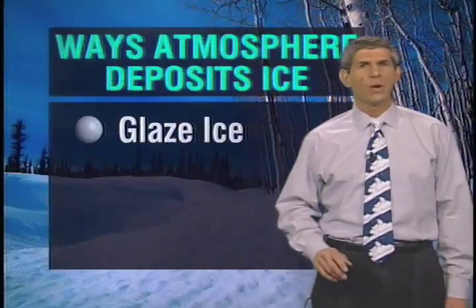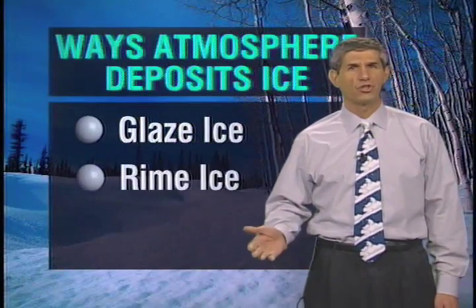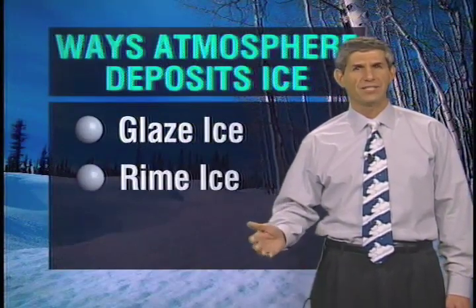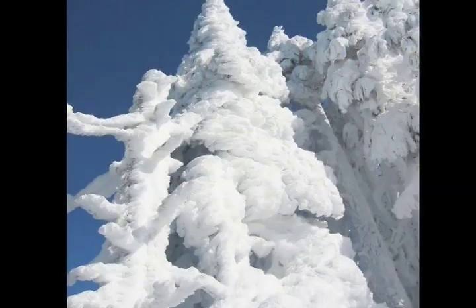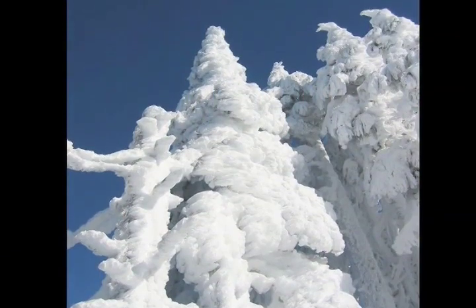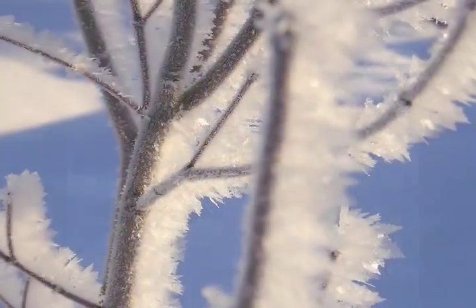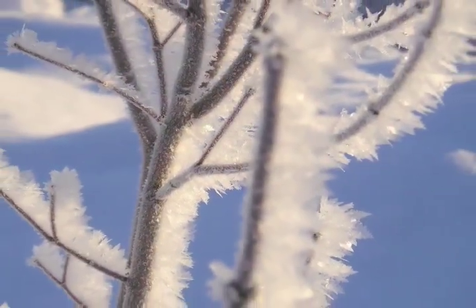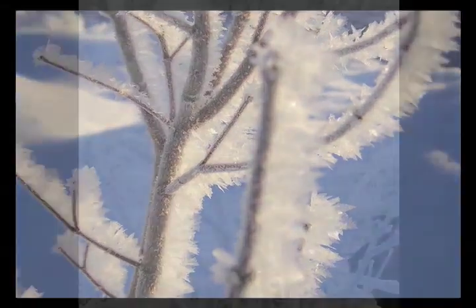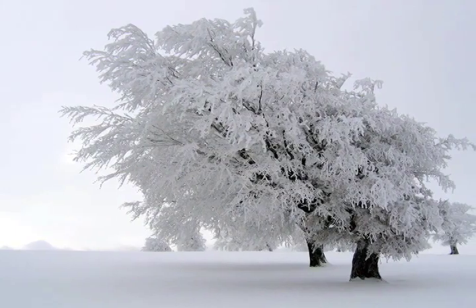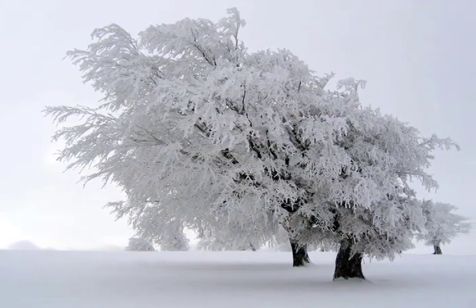A second way the atmosphere can deposit a frozen coating is rime ice, which is opaque and rough, with a texture more like a crunchy snow. Rime ice forms from supercooled cloud or fog drops that are much smaller than rain or drizzle drops, and they get air bubbles between them that give the opaque appearance.